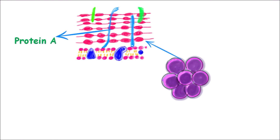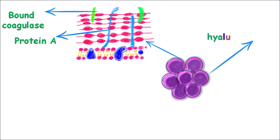The cell wall also contains another protein known as bound coagulase or clumping factor, which helps the bacteria to stick to various cells and tissues. This can be detected by the slide coagulase test, described later.